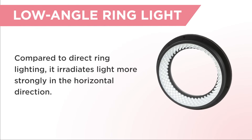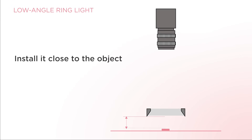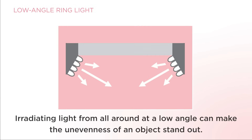Compared to direct ring lighting, low-angle ring lighting irradiates light more strongly in the horizontal direction. Install it close to the object. Irradiating light from all around at a low angle can make the unevenness of an object stand out.